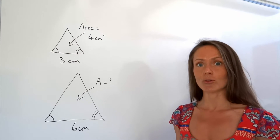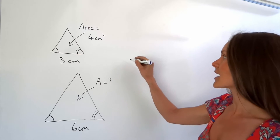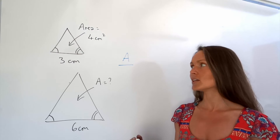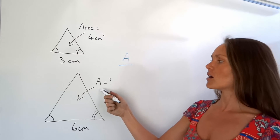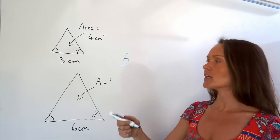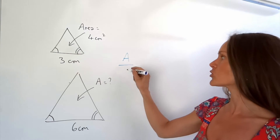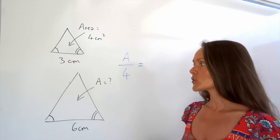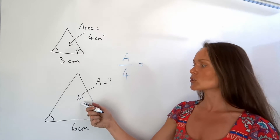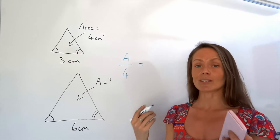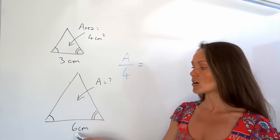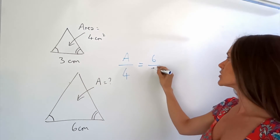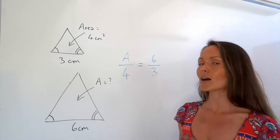I'm going to start by writing down the unknown — the one I want to find — so in this case capital A. Then I divide by the corresponding area, so we've got the large area divided by the corresponding area in the smaller triangle. I'm also going to divide the sides: I'm doing the large base, which is 6, over the small base in the small triangle, which is 3.